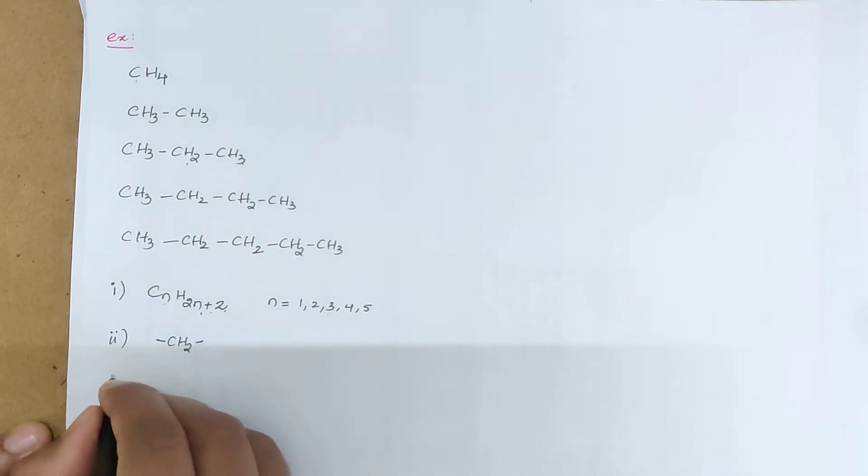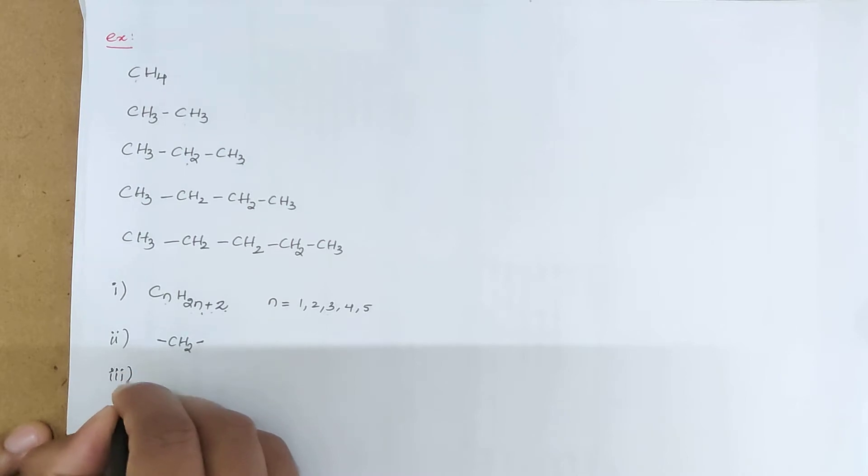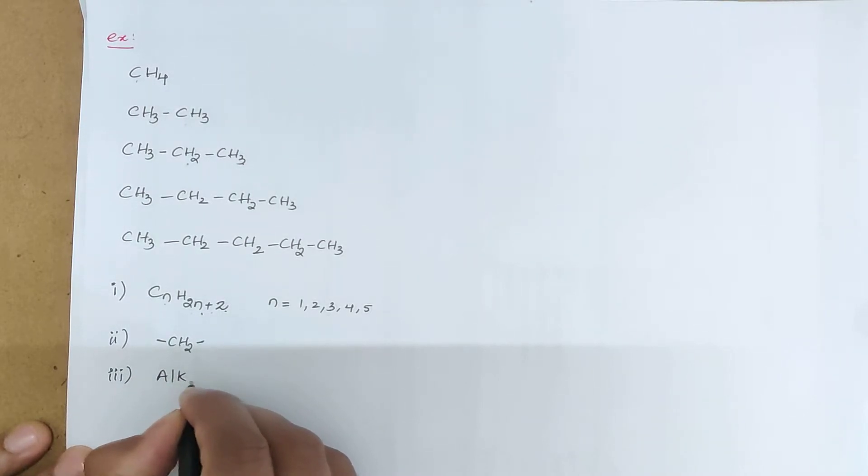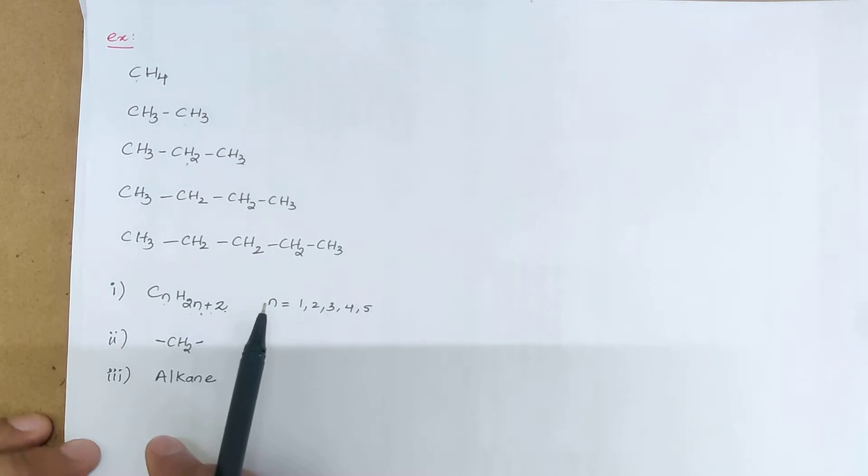All these belong to the family of alkane. These are saturated compounds with a single bond present between carbon and carbon. The properties are also almost the same. The physical properties increase as we move from one member to another, that is with increasing molecular mass. And these also have some common methods of preparation. That is why this is an example of a homologous series.